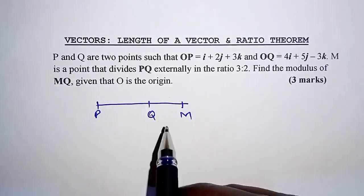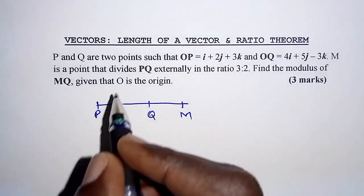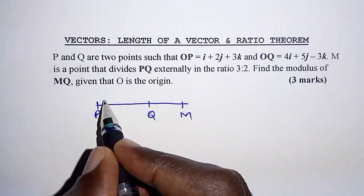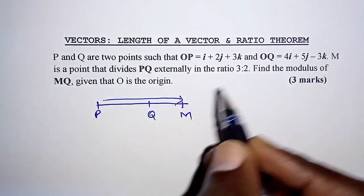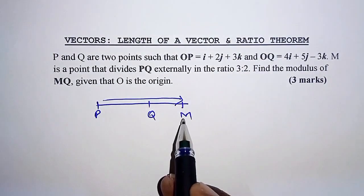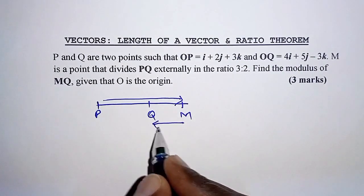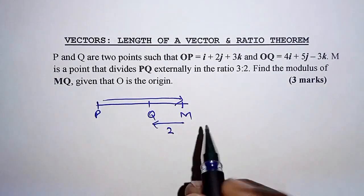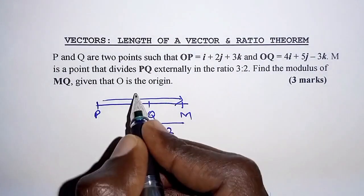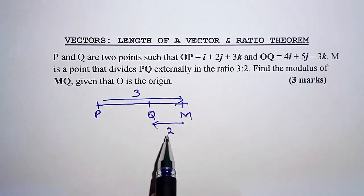M dividing PQ externally means we first move from P to M and that gives us 3 units, and then from M to Q we move 2 units. So PM is 3, MQ is 2.